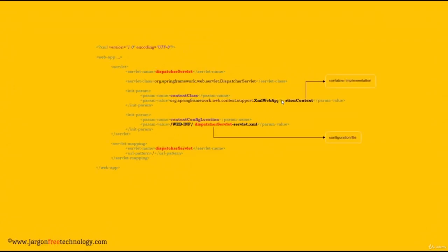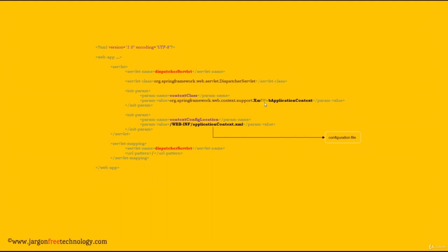The default container implementation used is XMLWebApplicationContext. The default location of the configuration file is WEB-INF, and the default name should be of the format servlet-name-servlet.xml. So in our case it should be dispatcher-servlet-servlet.xml, because dispatcher servlet is the name we have given to the servlet. We can configure the defaults if we want. As far as the container implementation is concerned, we will stick with the default implementation — that is XMLWebApplicationContext.